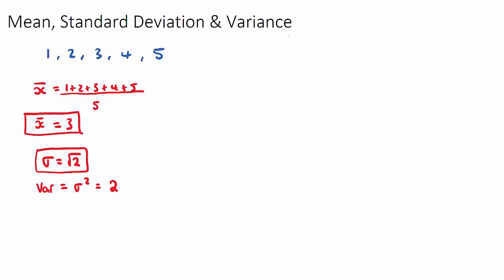Now what common IB questions then ask is they say, if this original data set, if some constant value was added to all of the terms. So a constant, constant value of, let's say 10, is added to every term. So what will our new data set look like? Well, we'll just need to add 10 to every term, so it'll be 11, 12, 13, 14, and 15.